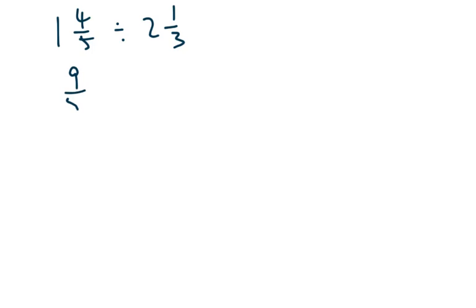We'll say 1 4/5 divided by 2 1/3. So I'm going to turn this into improper, which is 9/5 divided by 7/3, which is 9/5 times 3/7. And nothing cancels.